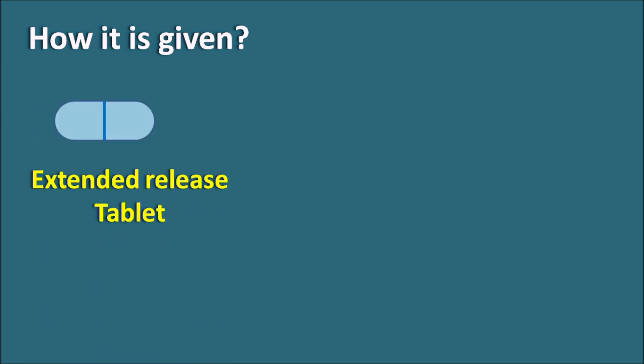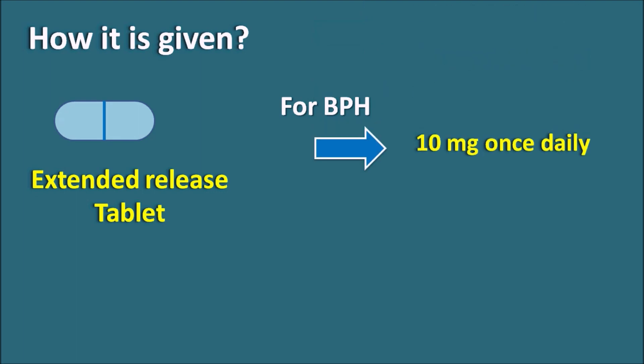How is it given? Alfuzosin is given as an extended-release tablet for benign prostatic hyperplasia, at a dose of 10 mg once daily. Alfuzosin is an alpha-1 blocker with a quinazolin-4-amine moiety, acting as an antagonist on alpha-1 receptors and alpha-1A receptors. It is indicated for the treatment of BPH, as it produces bladder relaxation and increases urinary flow.